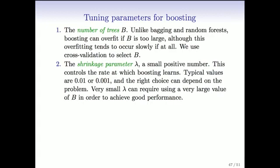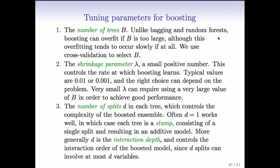The other tuning parameter is the shrinkage parameter. Remember, every time we grow a tree, we don't accept the full tree — rather, we shrink it back by a quite small fraction. Typically 0.01 or 0.001 are the choices one uses. So those are the three tuning parameters. One can try a few values of each and look at the cross-validation error over the grid to choose good sets of parameters.